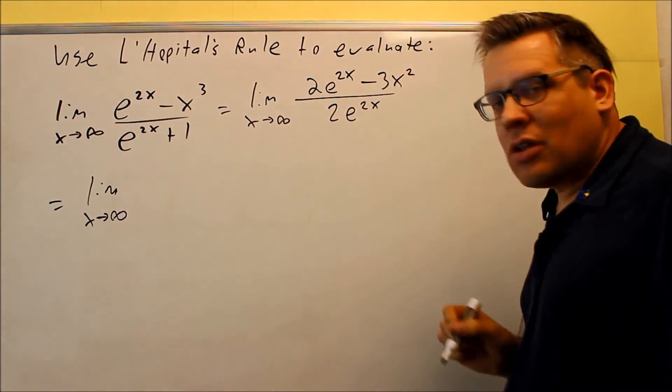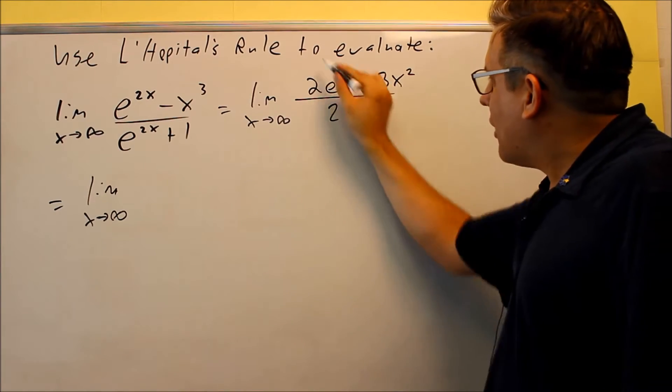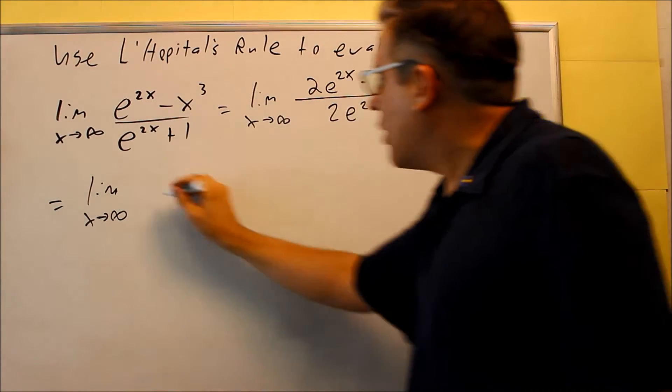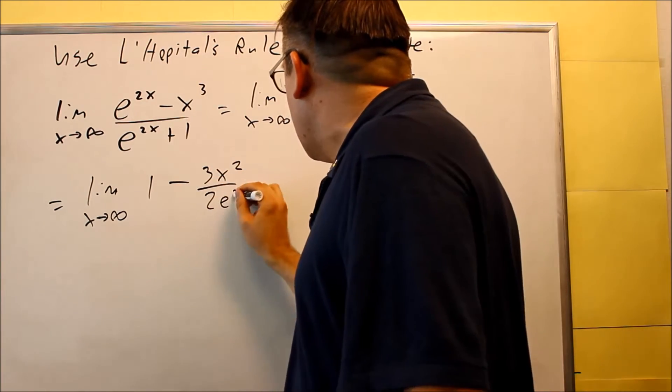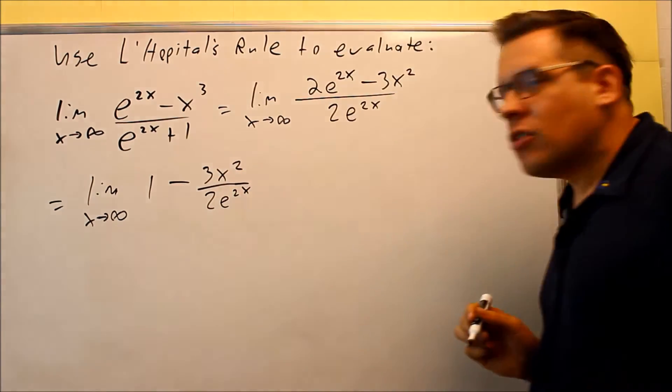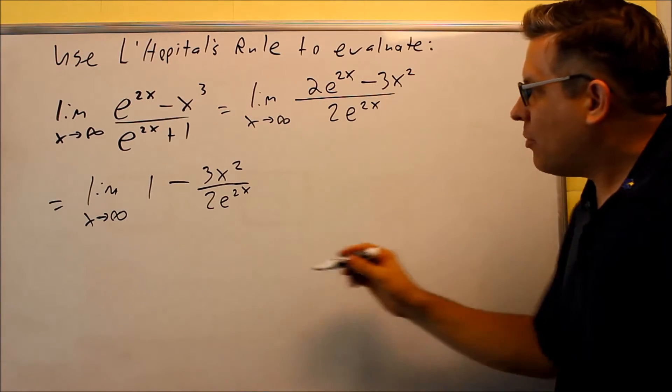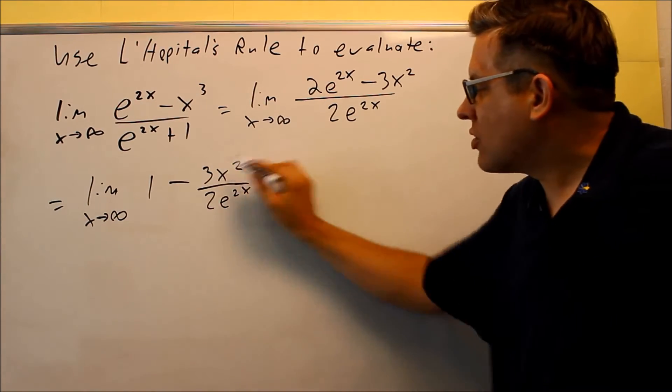We're dividing both things by that. If I divide the first one, this over this, I get a 1. But the second one is going to be minus 3x squared over 2e to 2x. So yeah, you are able to break it down like that, but you have to make sure you do the second piece as well.